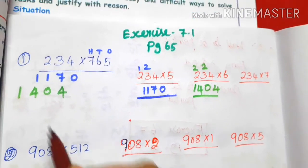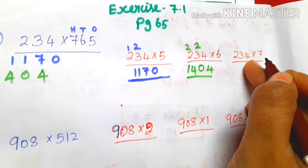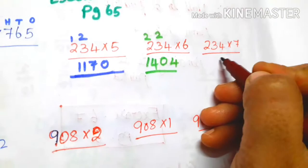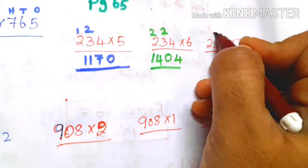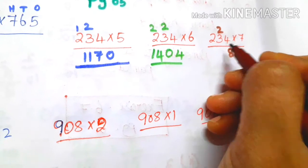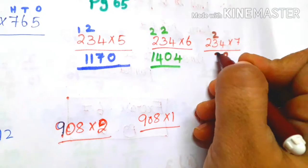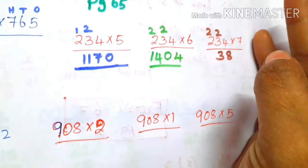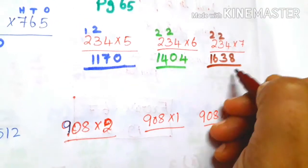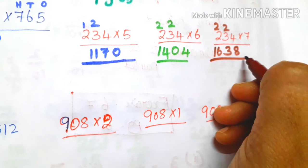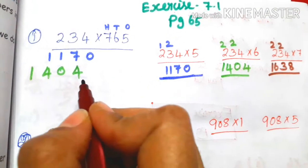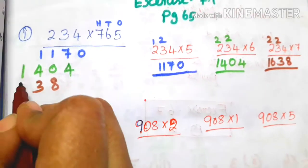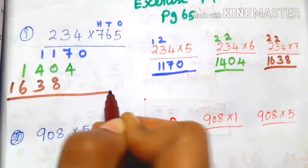234 into 7. Working through: the answer comes to 8, 3, next 6, 1 — so 1638.